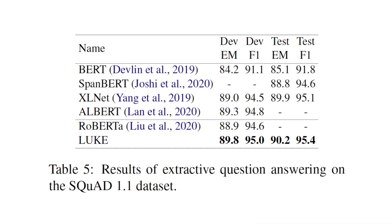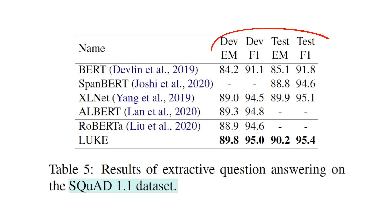Lastly, we have extractive question answering. The task is very similar to cloze-style QA, except that the model must predict an answer span in the passage rather than just an entity span. The dataset used is the famous SQuAD 1.1 dataset by Stanford, consisting of 100,000 question-answer pairs. The evaluation metric is exact match and token-level F1 score on the dev and test sets. Similar to the other tasks, LUKE achieved state-of-the-art results by a slight margin.